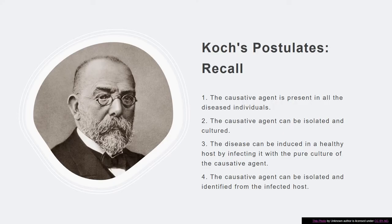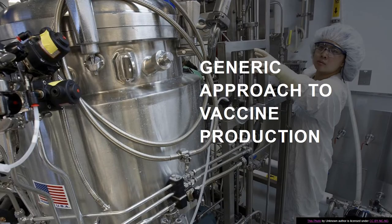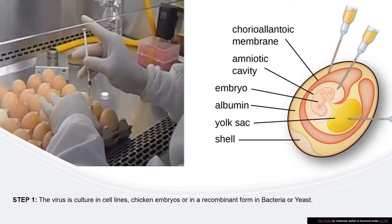We will then delve into Koch's postulate and the recall of Koch's postulate, and then into the general approaches to vaccine production. In the general approach to vaccine production, I will present a generic overview of vaccine production, which involves the culture of the live virus in either cell lines or in chicken embryos.